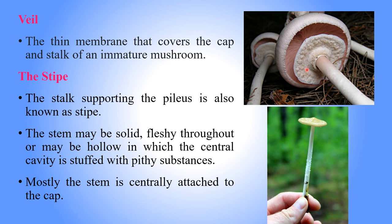The veil is a thin tissue membrane that covers the cap. When the mushroom is immature, the pileus and stem are covered with this tissue membrane. As the baby mushroom starts to grow, the upper portion expands and forms into the cap. At that time, the tissue membrane tears and hangs down from the cap — this is the veil.